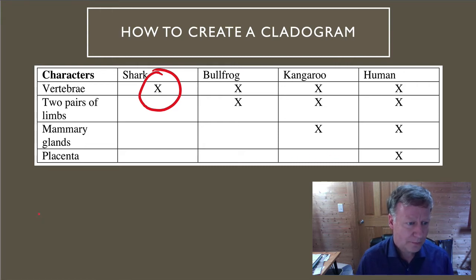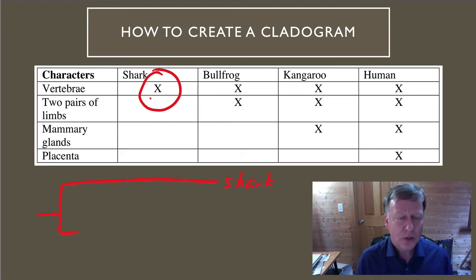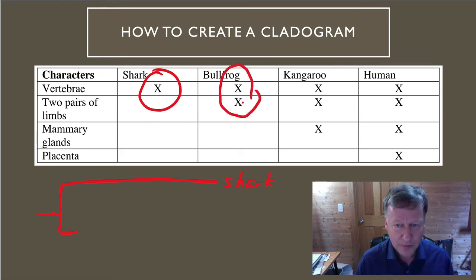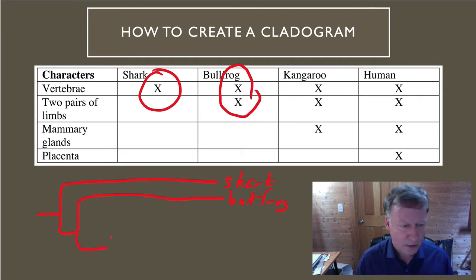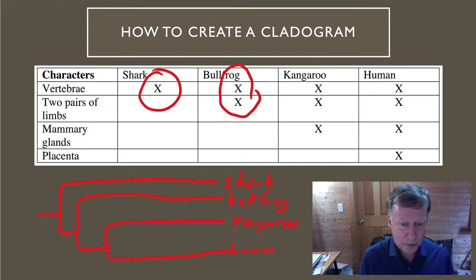To draw this cladogram, you start off with the root — the common ancestor that everyone shared. Then split off and write your out-group: the shark. Everyone else goes the other way. Next, ask who's the next one that stands out as different — that would be the bullfrog, with two characteristics in common but none of the others. So the bullfrog splits off next, and the remaining members go the other way. Finally, the kangaroo and human split. Remember, that node can be rotated, so it doesn't matter which one's on top or bottom — you'll still have the same answer. That's how you draw a cladogram.